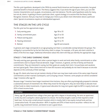The Life Cycle has five approximate stages: Stage 1, Early Earning Years, age 18 to 35; Stage 2, Family Commitment Years, age 25 to 50; Stage 3, Mature Earning Years, age 45 to 60; Stage 4, Nearing Retirement, age 55 to 70; Stage 5, Retired, age 60 and onwards. Each stage corresponds to an age grouping, but there is considerable overlap between the groups. The ambiguity is accounted for by the fact that every client is unique — for example, a 30-year-old client could be in either of the first two stages, and additional information about this client will help you identify the appropriate stage.